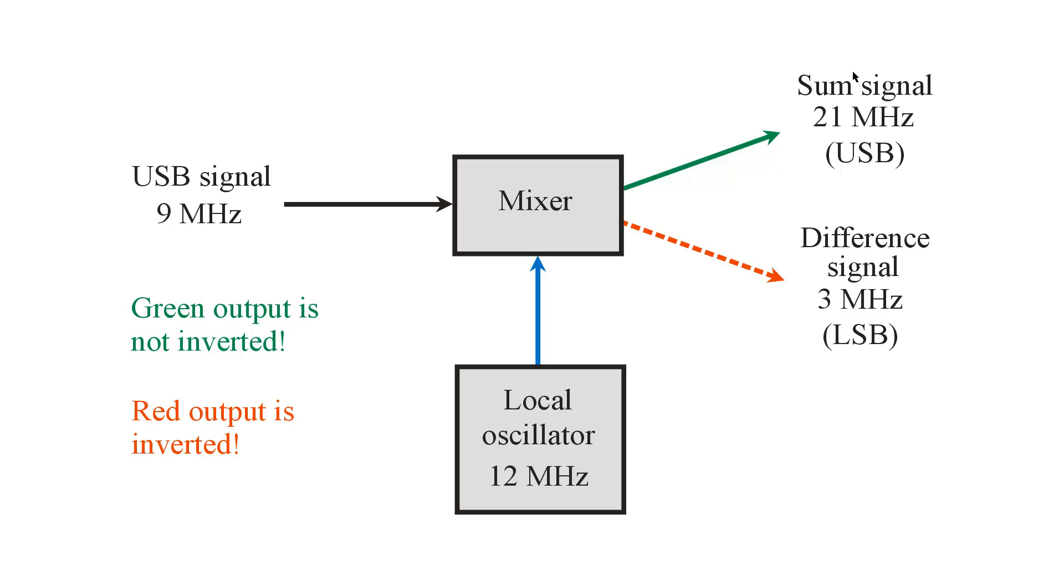And in this case, the sum signal is 12 megahertz plus 9 megahertz, or 21 megahertz. And the difference signal is 12 megahertz minus 9 megahertz, or 3 megahertz. However, the important thing is that if you mix signals in both ways so that you can take either output, if you simply mix them and then you select either output, there's no selective circuitry at all here in the output.